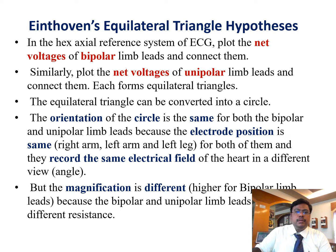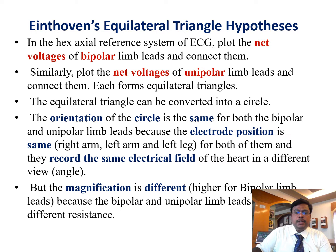In the x-axis reference system of ECG, plot the net voltages of bipolar limb leads and connect them. Similarly, plot the net voltages of the unipolar limb leads and connect them — each forms equilateral triangles. The equivalent triangle can be converted into a circle. The orientational circle is the same for both the bipolar and unipolar limb leads because the electrode position is the same — right arm, left arm, and left leg. They record the same electrical field of the heart in a different view, but the magnification is different, higher for bipolar limb leads because they have different resistance.